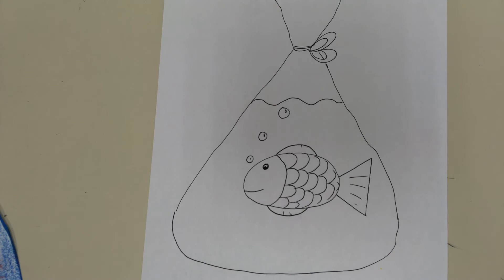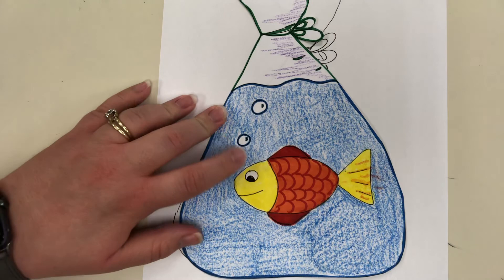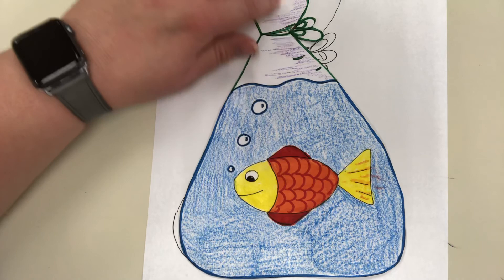When you're done with that, you're going to color in the water blue, which is a cool color. And then you're going to color in the fish, red, yellow, and orange, which are warm colors. You can add a little bit of purple and green details at the top, which I did just to add in some extra cool colors if you want to, but you don't have to.